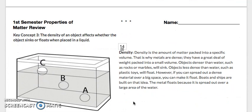Key Concept 3. The density of an object affects whether the object sinks or floats when placed in a liquid. Density is the amount of matter packed into a specific volume. This is why metals are dense. They have a great deal of weight packed into a small volume. Objects denser than water, such as rocks or marbles, will sink. Objects less dense than water, such as plastic toys, will float. However, if you can spread out a dense material over a big space, you can make it float. Boats and ships are built on that idea. The metal floats because it is spread out over a large area of water.